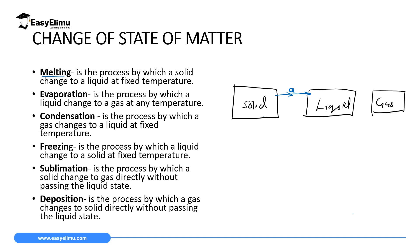If you want to change a liquid to gas, you increase the temperature — this is process B — and the liquid changes to gas. That process is called evaporation, which is the process of changing liquid to gas at any temperature. Then we have condensation, process C, which is when a gas changes to a liquid at a fixed temperature. Then we have freezing, the process of changing a liquid to a solid by reducing the temperature of the liquid.